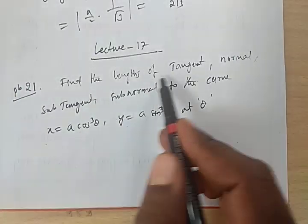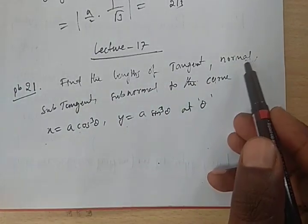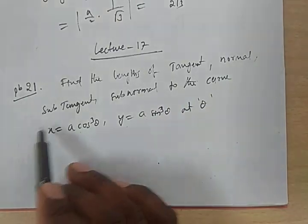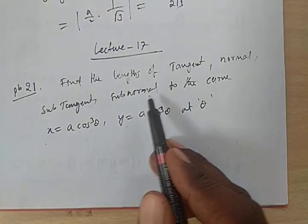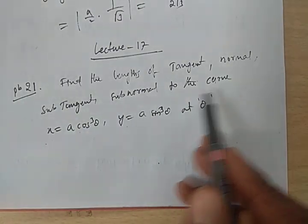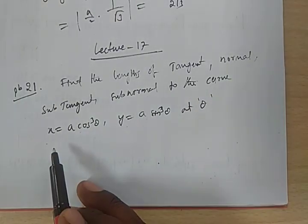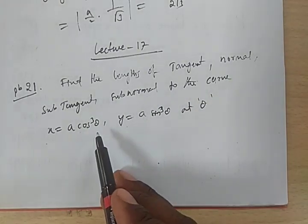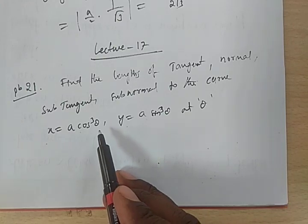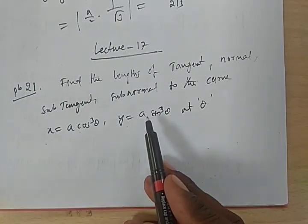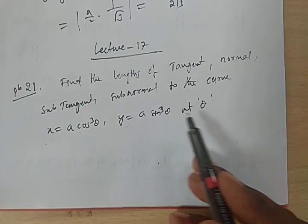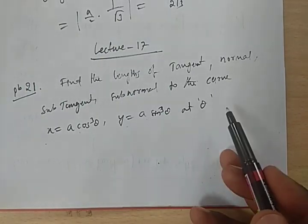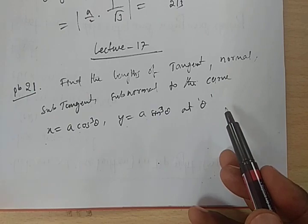Find the length of tangent, length of normal, length of sub-tangent, length of subnormal to the curve x equals a cos³θ, y equals a sin³θ at the point θ.